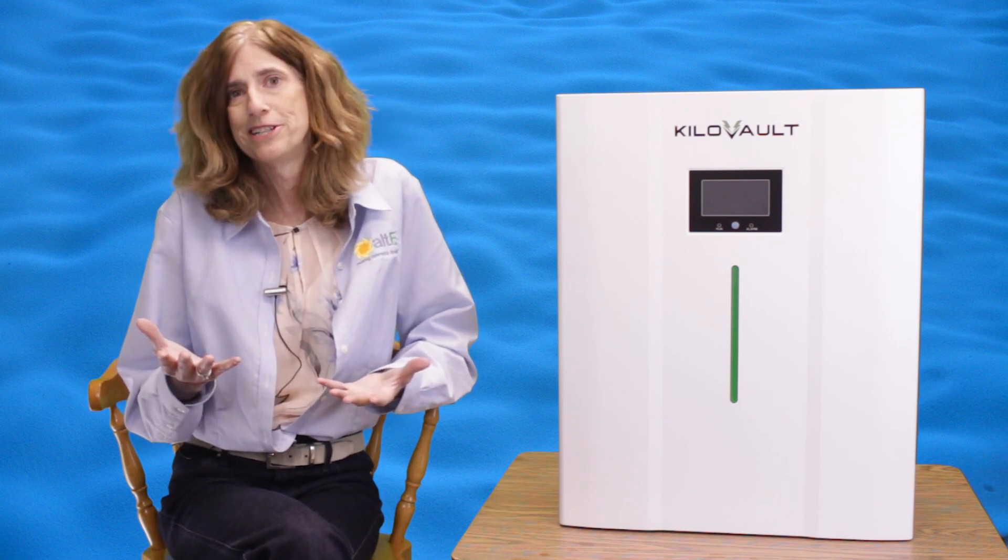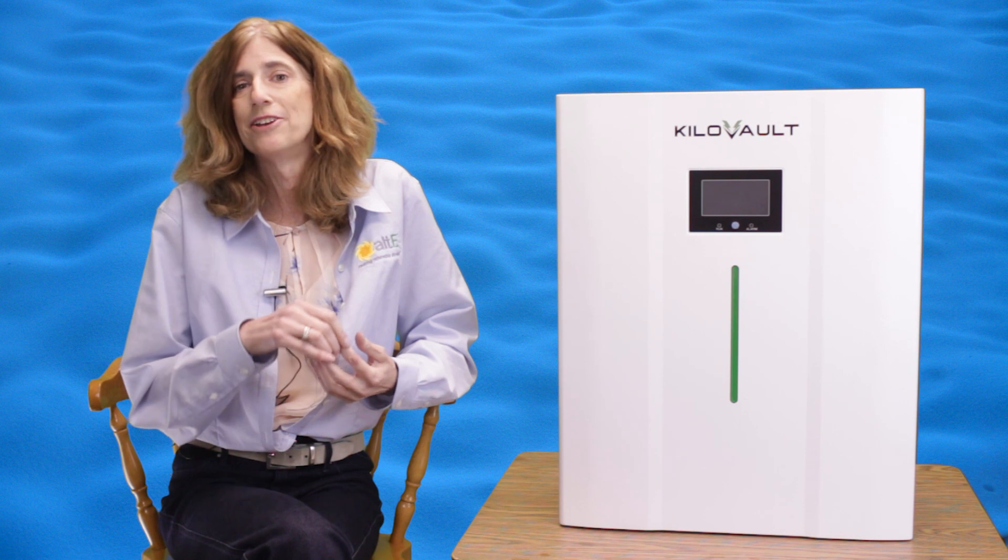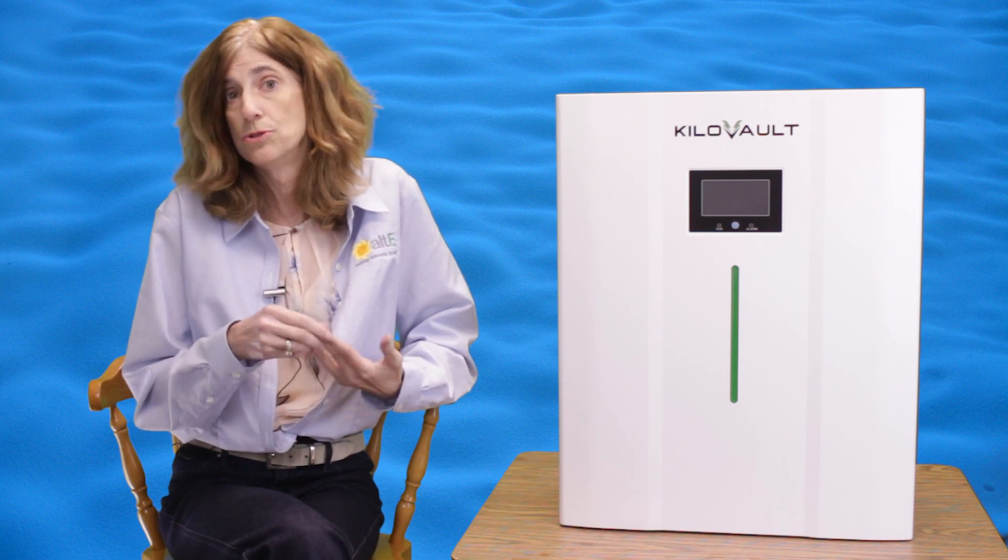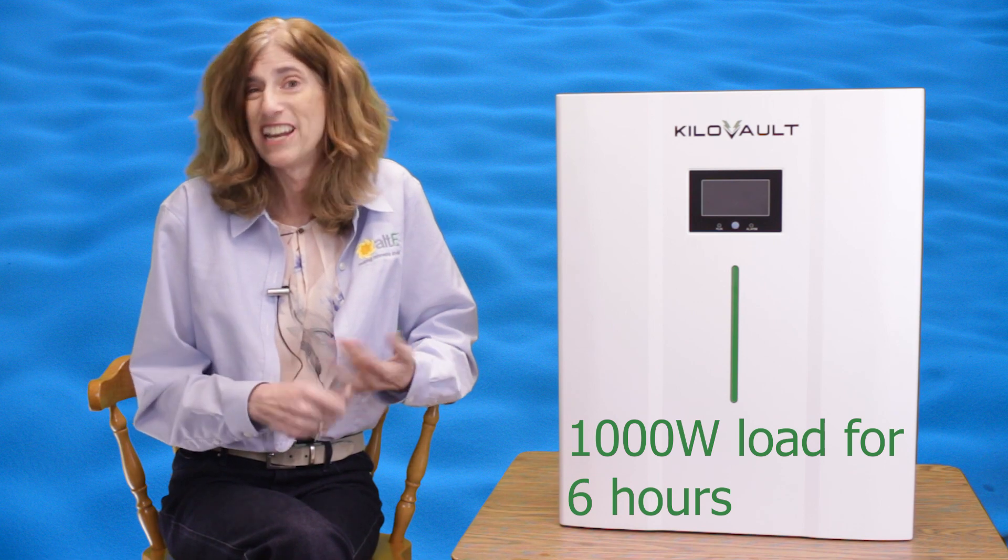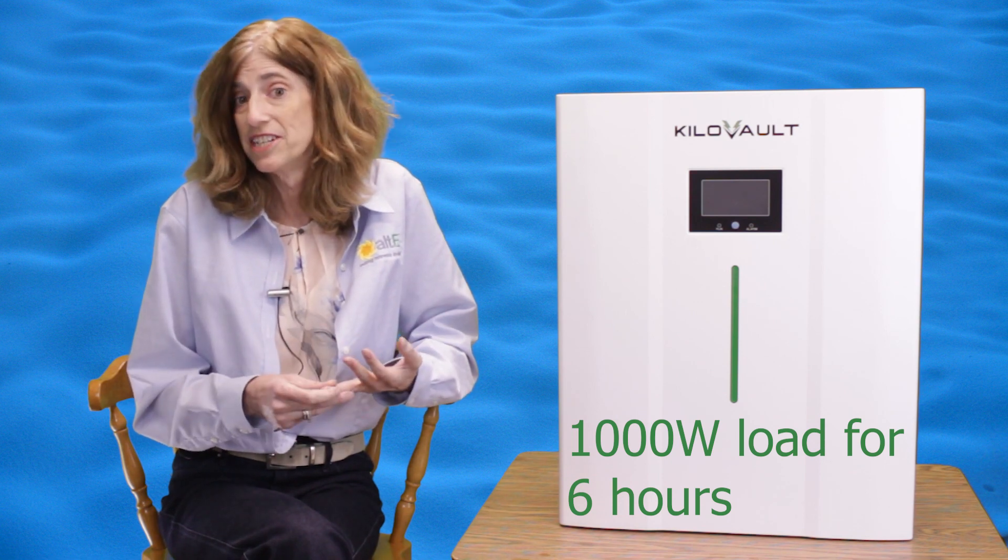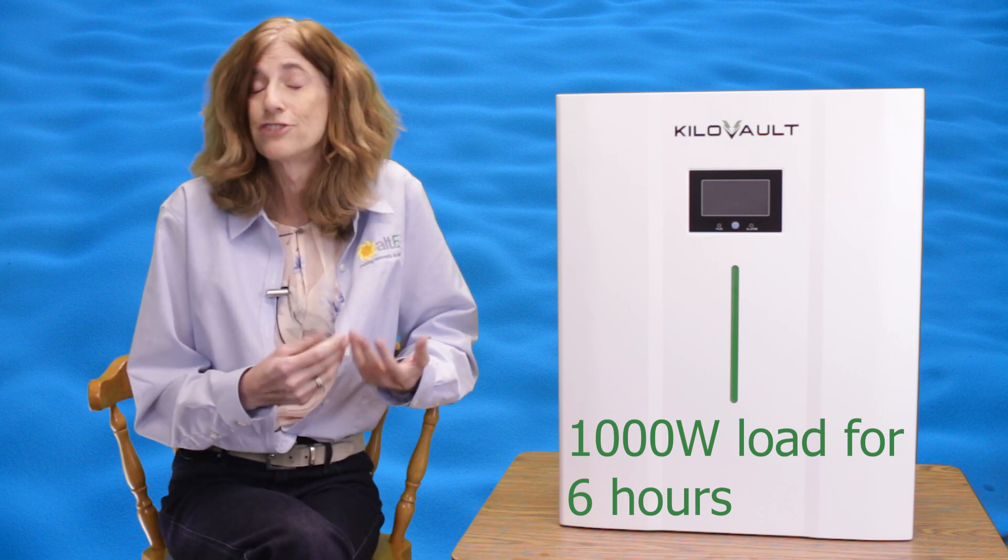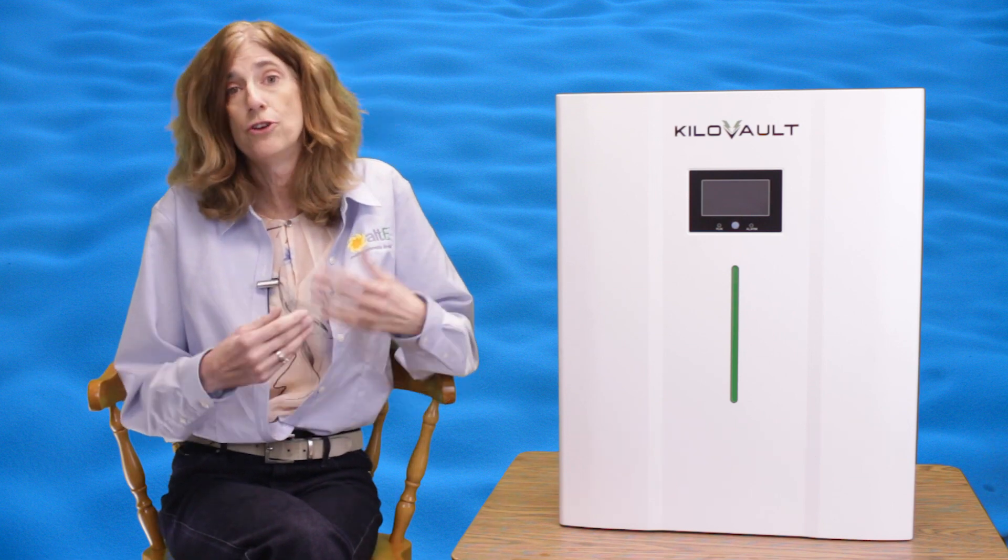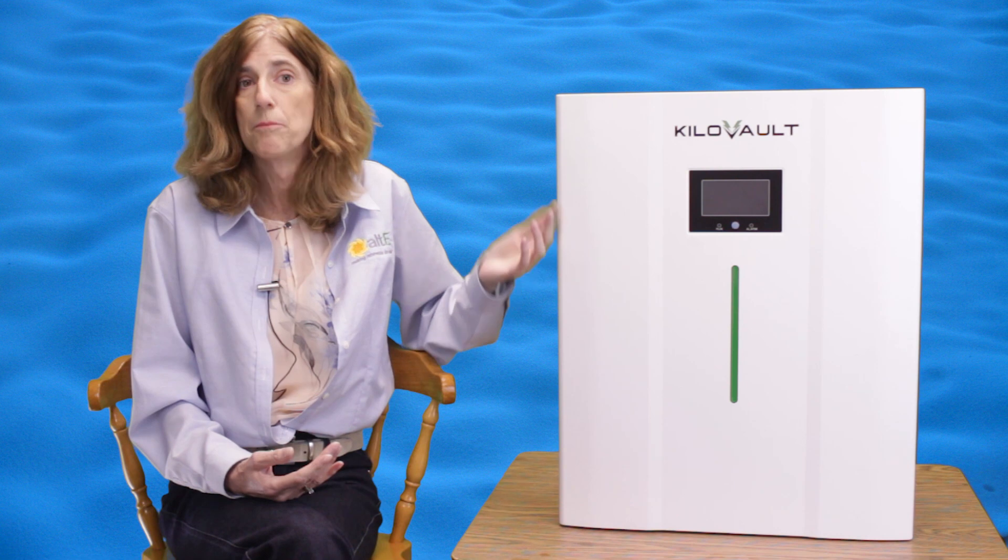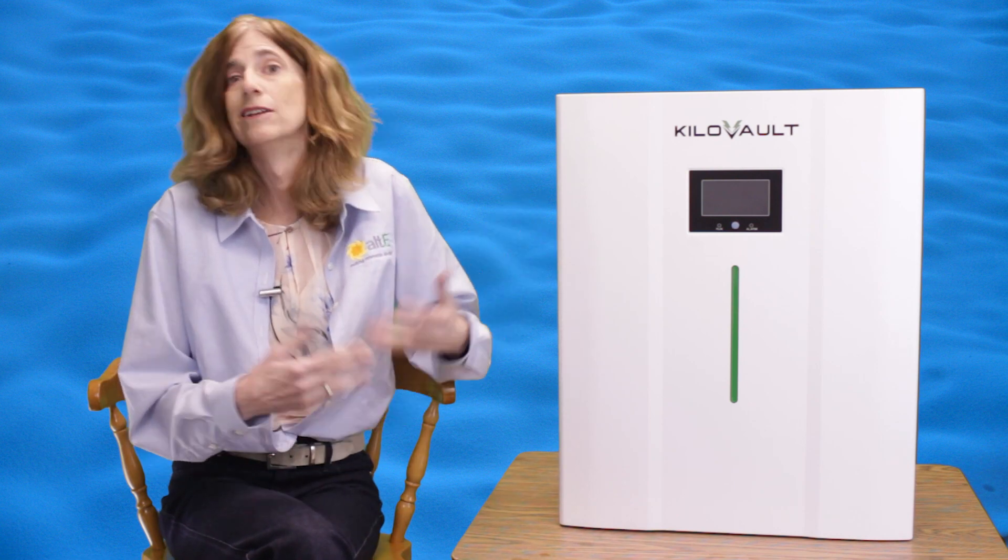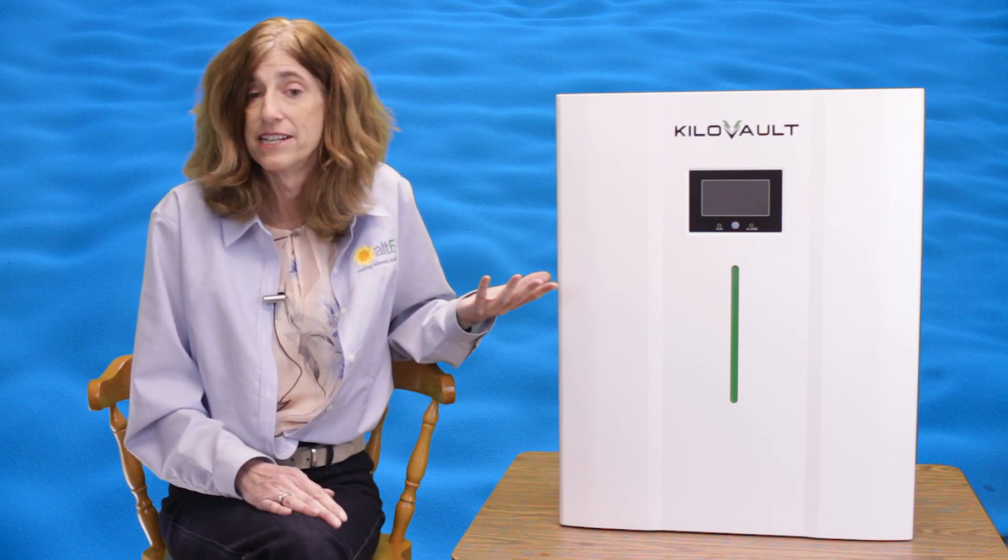Now you've probably heard me say before that anything that makes heat or cold uses a lot of energy. So let's say you're trying to run a thousand watt heater or air conditioner. It'll run that for six hours. So if you need to run it for more than that, you would just need to get more of the batteries wired in parallel. So for 24 hours it would take four of these batteries.